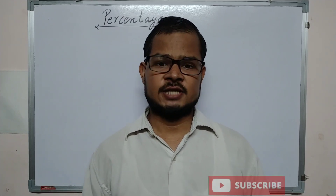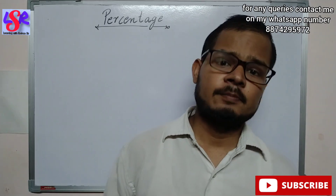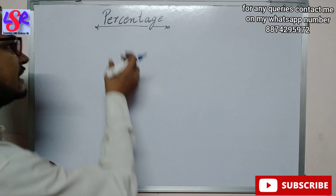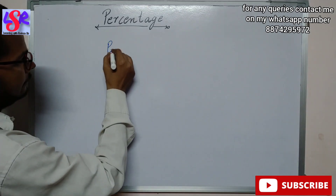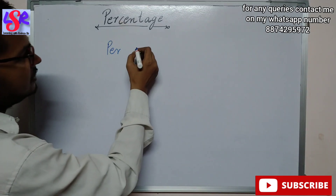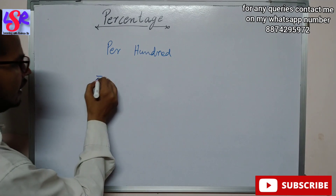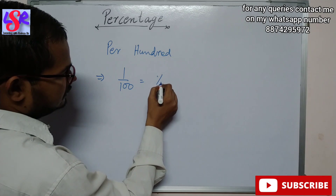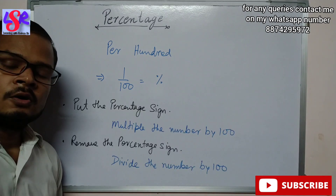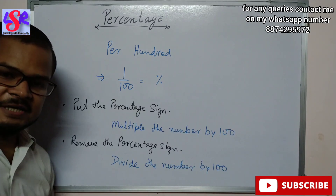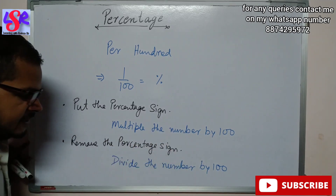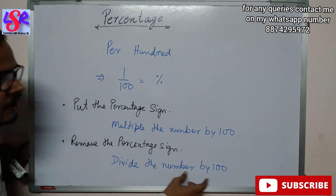Hello everyone. Here we are going to start with the chapter on percentages. First of all, what is percentage? Percentage means the comparison with 100. This chapter itself means per cent — cent means 100. So we can write this as 1 upon 100, which is also equal to the percent symbol. Whenever we have to put the percentage sign, we multiply the number by 100, and when we have to remove the percentage sign, we divide the number by 100.